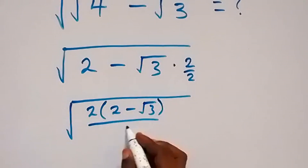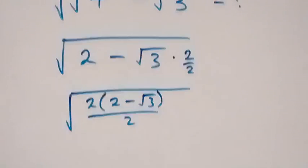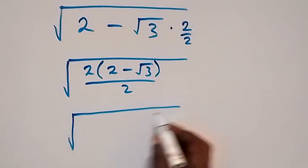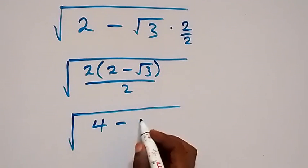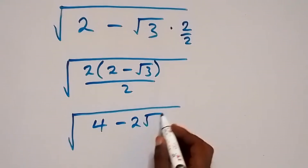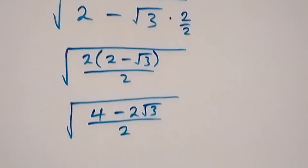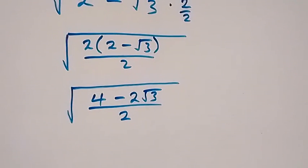Same thing with this. Then this 2 here can now open this bracket. And then this will be square root of we have 4 minus 2 root 3, then divided by 2. Then we are interested in making this bracket look like when we have...